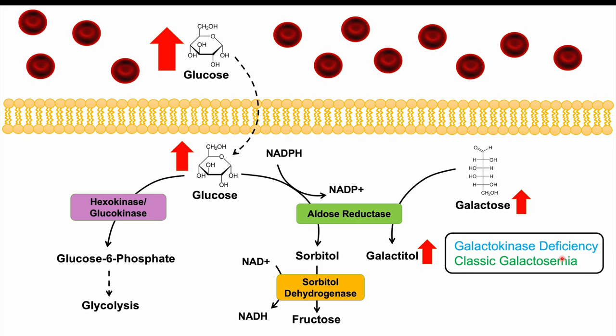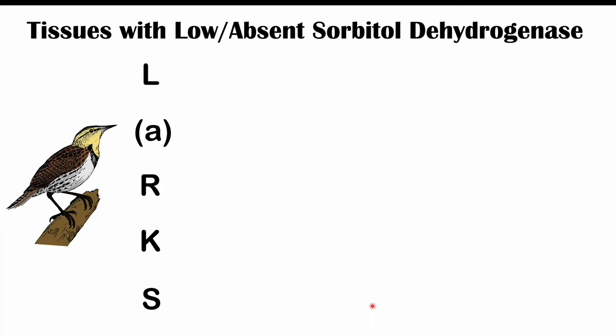Classic galactosemia can also produce this effect. These are genetic conditions often identified in young infants when they begin drinking milk or consuming lactose. Tissues that have low or absent sorbitol dehydrogenase can be remembered using the mnemonic LARKS — where the A stands for aldose reductase, indicating these tissues only have aldose reductase without sorbitol dehydrogenase.